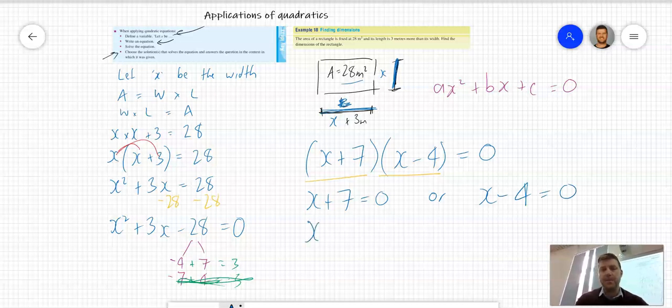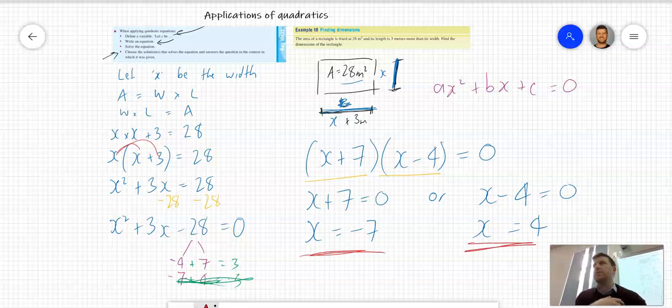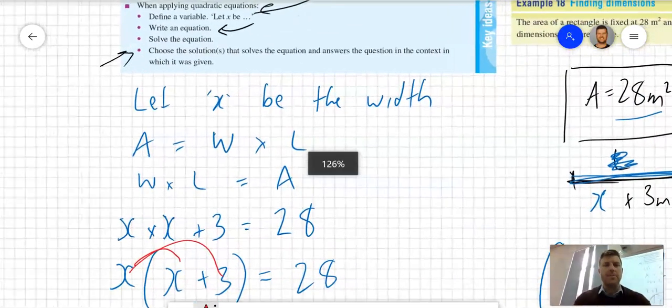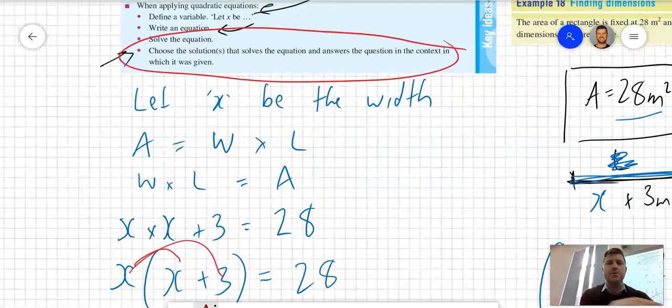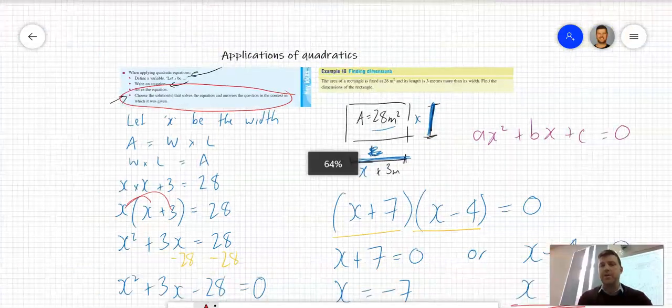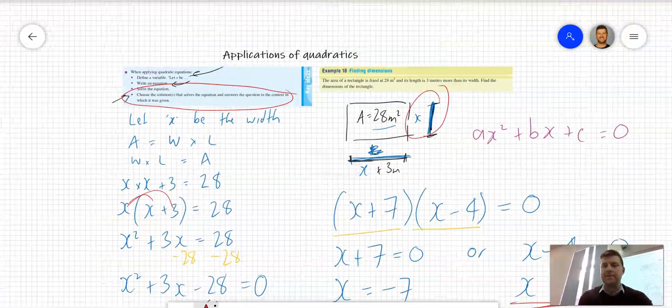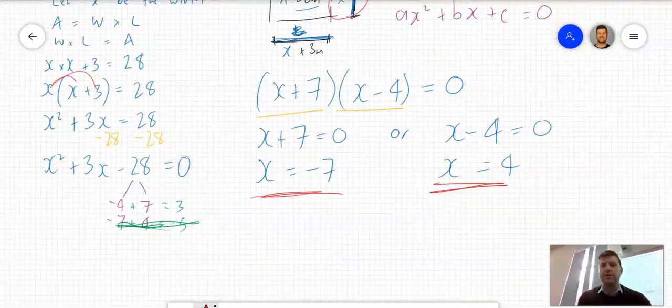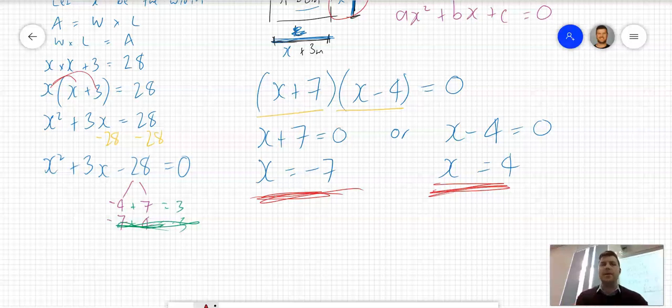These are my two solutions. The final point says choose the solution that solves the equation and answers the question in the context which it was given. We're looking for the width of a rectangle. Which one is my answer, -7 or 4? It has to be 4. Why can't it be -7?